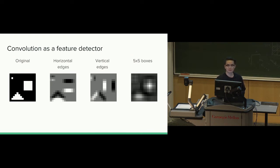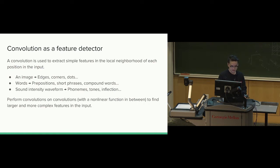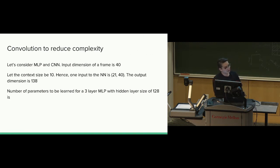Another benefit of CNNs is reduced model complexity compared with MLP. Convolutional neural networks have fewer parameters to learn, so training speed is quicker. Taking the homework one part two example: with input size 21 by 40, using three layers of MLP with hidden size 128, you get roughly 21 times 40 times 128 plus 128 times 128 plus another fully connected layer — roughly on the order of hundreds of thousands of parameters.